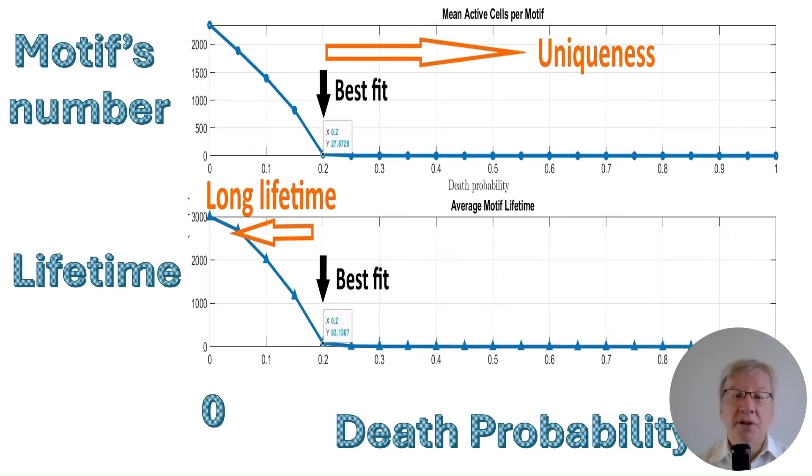After exploring the extremes, let us examine a finer structure. This plot summarizes the results of millions of simulations. The black arrow highlights the specific point, the best fit, where the model parameters most closely match the real world data.